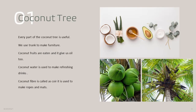Now children, the second important tree is coconut tree. Every part of the coconut tree is very much useful. Some people use the trunk to make furniture. Coconut fruits are eaten and it gives us oil too. Coconut water is used to make refreshing drinks. Coconut fiber, which is also called coir, is used to make ropes and mats.